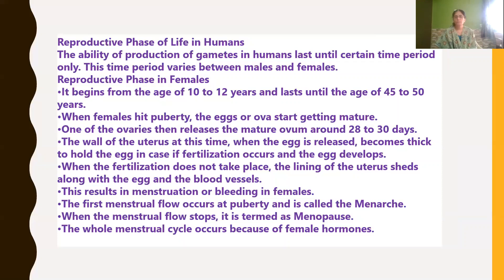The wall of the uterus prepares itself by becoming thick to hold the egg in case fertilization occurs. If fertilization does not take place, the lining of the uterus sheds off along with the unfertilized egg and blood vessels — this results in menstruation, or bleeding in females. The first menstrual flow occurs at puberty and is called menarche.